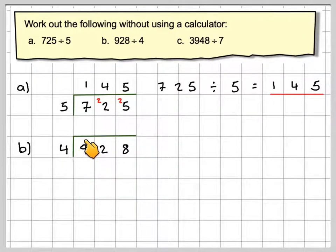So 4 goes into 9 two times. And how many are left over? Which is 1. 4 into 12 goes 3 times exactly.